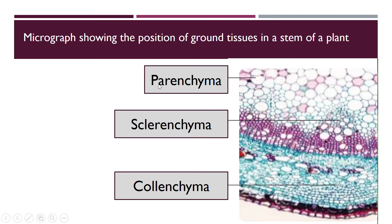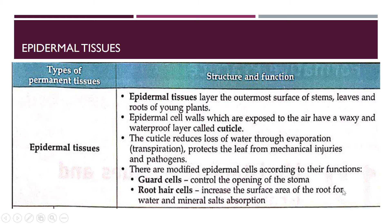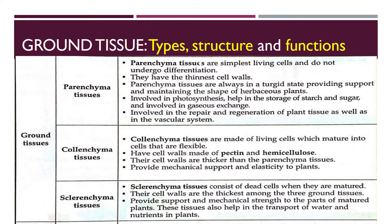New terms for you — parenchyma, collenchyma, sclerenchyma. These are the ground tissues. Look at the cells, cuba kamu kenal pasti. Parenchyma — simplest living cells, do not undergo differentiation, providing support. Collenchyma — thicker cells than parenchyma, living cells. Sclerenchyma — the thickest cells, dead cells.